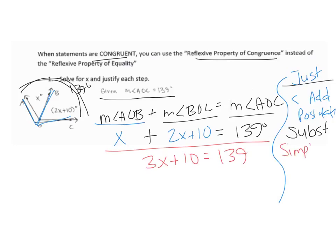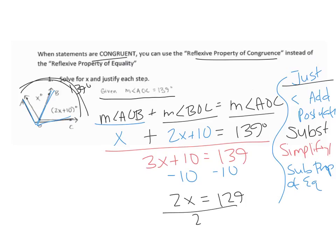You can write simplify, combine like terms, or addition because you added x plus 2x — but it's not the addition property of equality, because that would be adding to each side. Then I subtract 10 — subtraction property of equality — giving 3x equals 129. Divide both sides by 2 — division property of equality — so x equals 64.5.